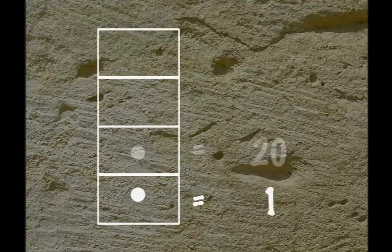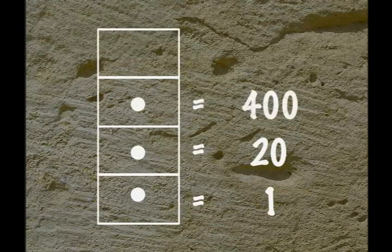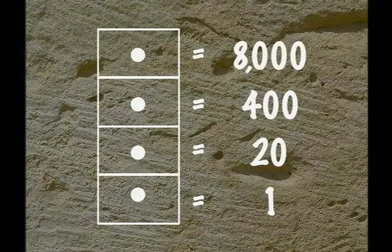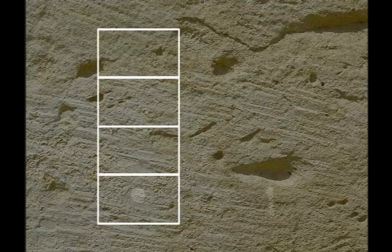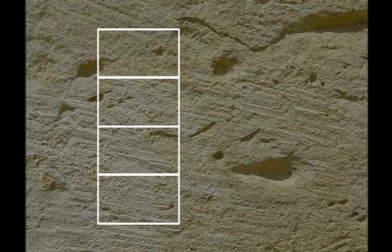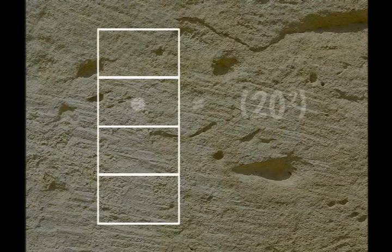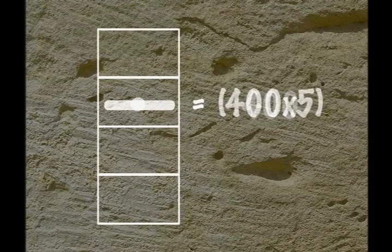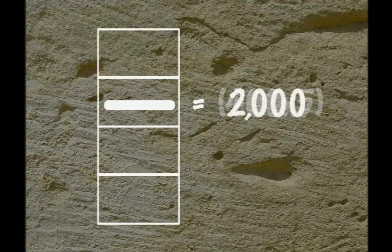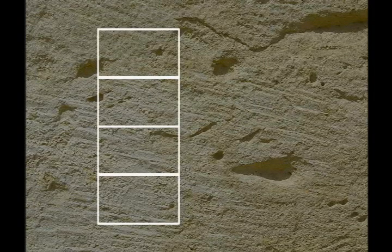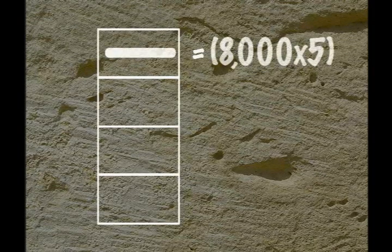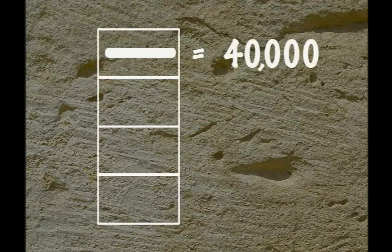A dot in each new place is worth 20 times the value of a dot in the previous place, and a bar is always equal to 5 dots. So reading from bottom to top: a dot in the ones place is worth 1 and a bar is worth 5. In the 20's place, a dot is worth 20 to the first, or 20, and a bar is worth 20 times 5, or 100. In the 400's place, a dot is worth 20 to the second, or 400, and a bar is worth 400 times 5, or 2,000. And in the 8,000's place, a dot is worth 20 to the third, or 8,000, and a bar is worth 8,000 times 5, or 40,000.